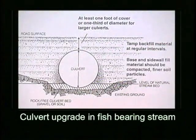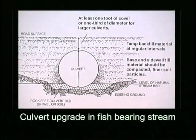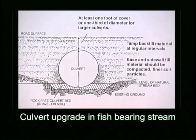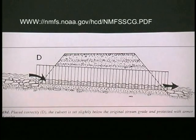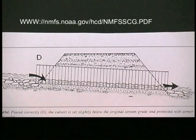Recent guidelines from the National Marine Fishery Service and the California Department of Fish and Game suggest culverts placed in fish streams be positioned with 25% of the culvert diameter beneath the natural stream bed elevation.